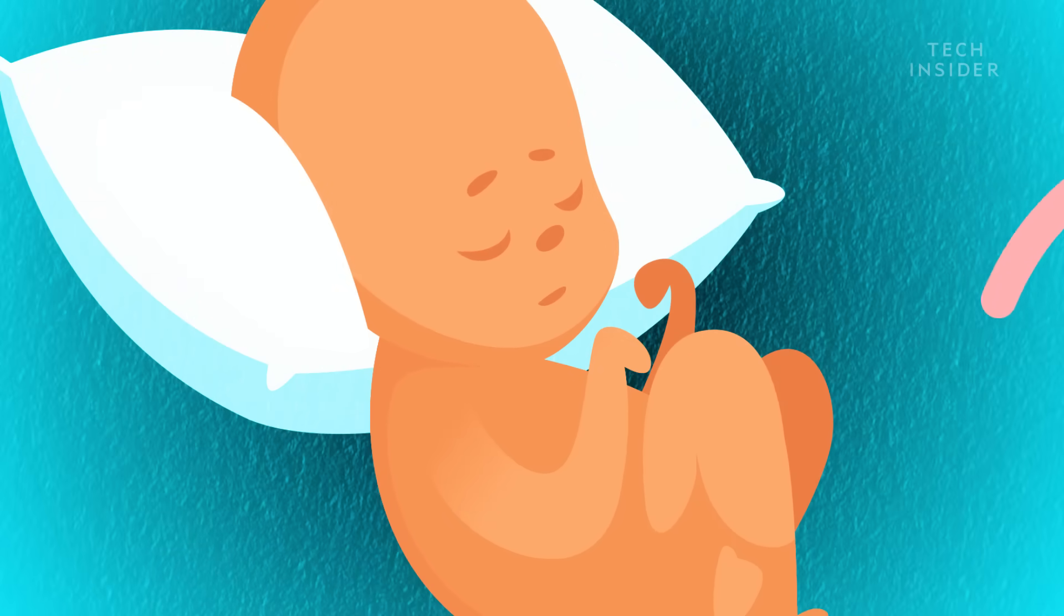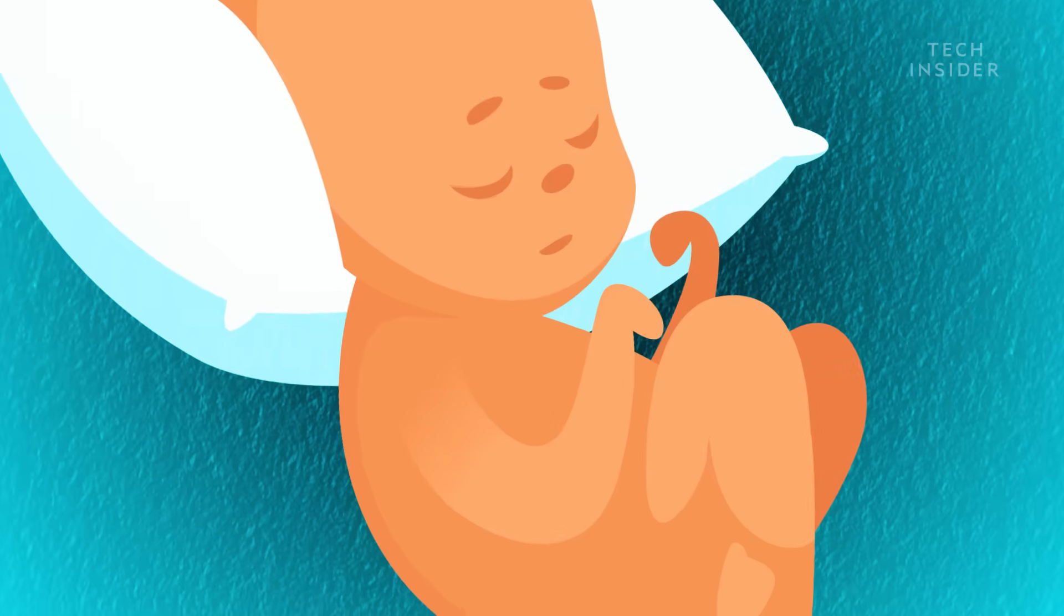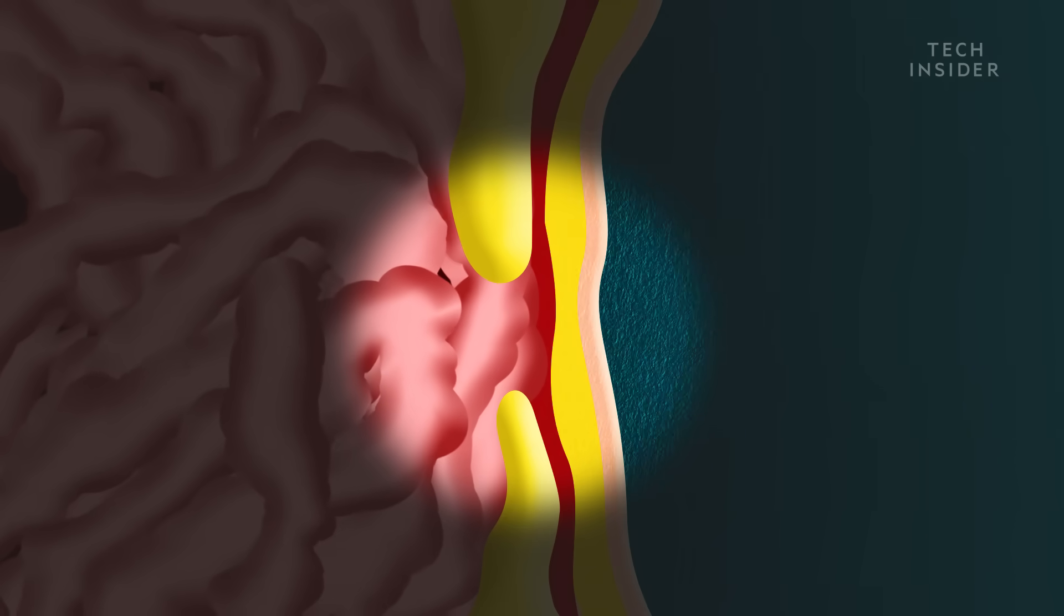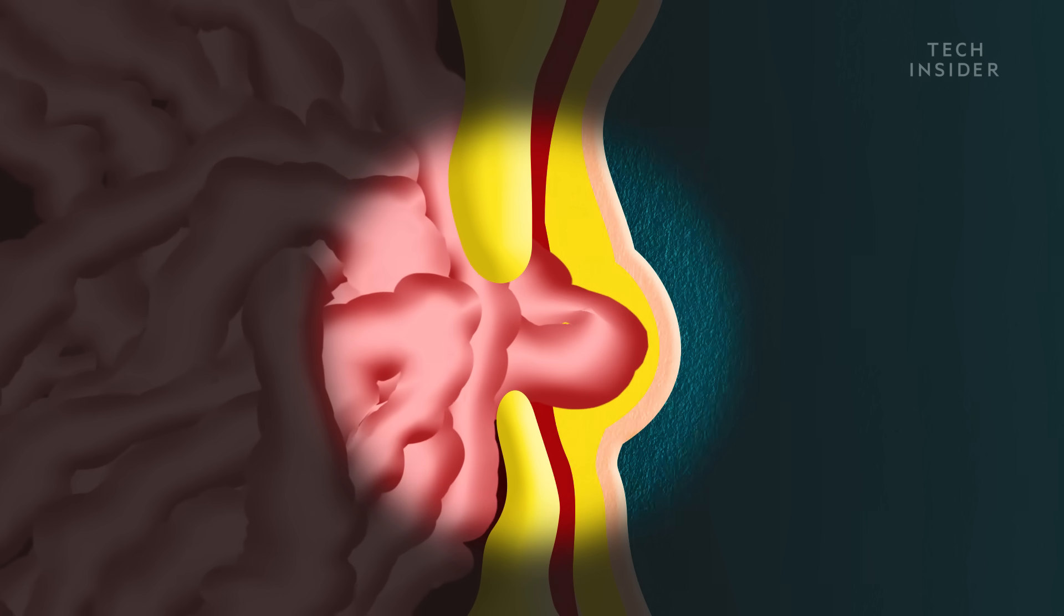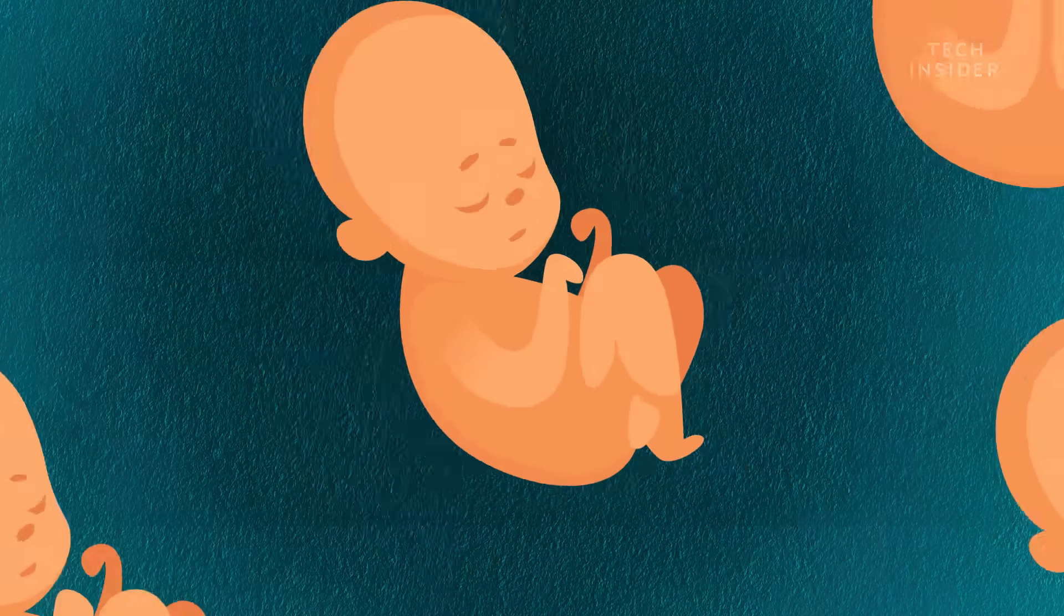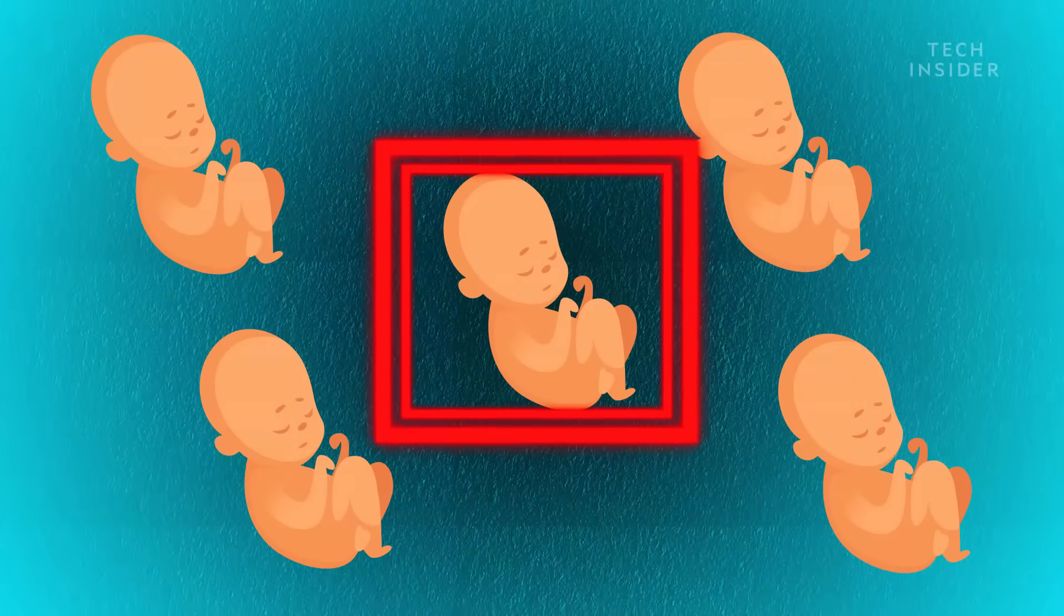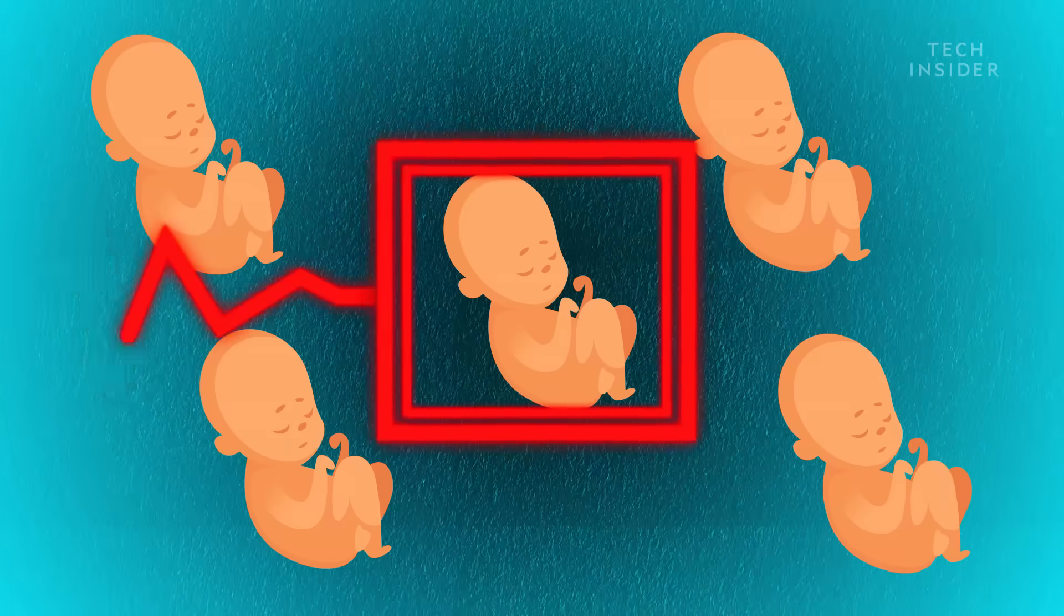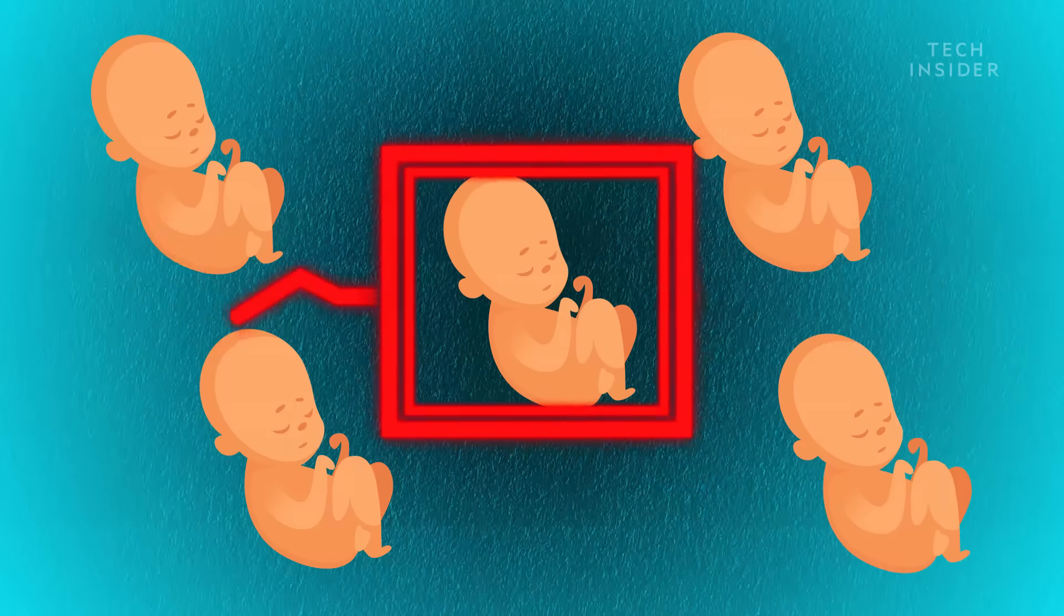Normally that opening seals up after you're born, but in some cases, it never really closes all the way. This can allow internal organs to slip through, creating a bulge behind your belly button. Navel hernias affect as many as one in five newborns in the US, but they're rarely life-threatening, and are far less common in adults.